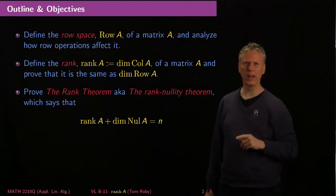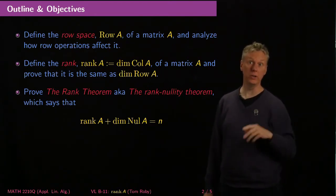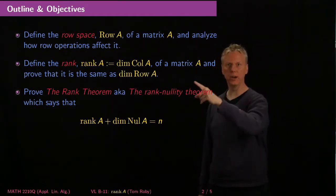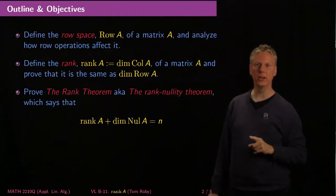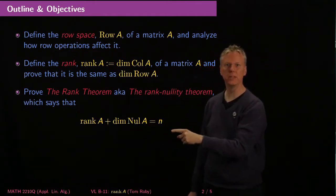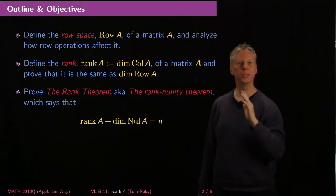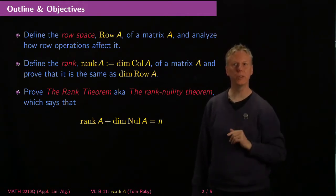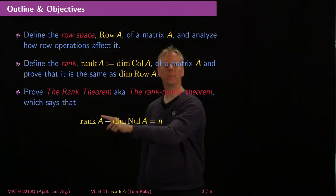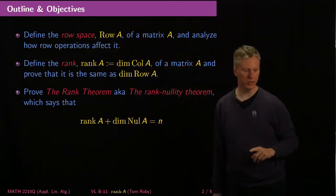Sometimes that theorem is called the rank theorem. The textbook we're currently using uses the rank theorem to refer to two different things: both this theorem and what's sometimes called the rank-nullity theorem. Nullity is another word for the dimension of the null space. It says that the rank of A plus the dimension of the null space of A equals the number of columns — equivalently, the dimension of the column space of A plus the dimension of the null space of A equals the number of columns.